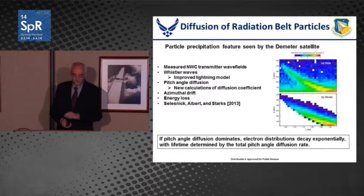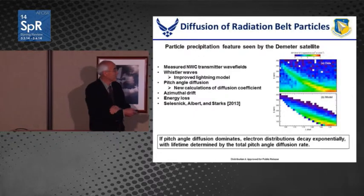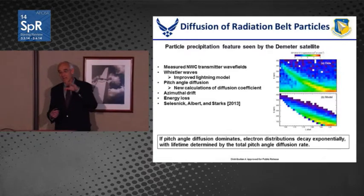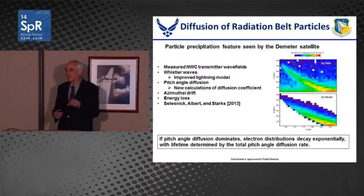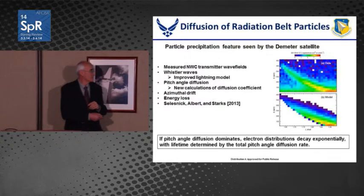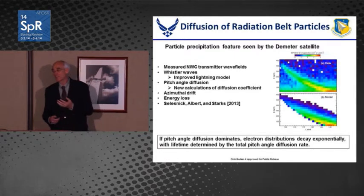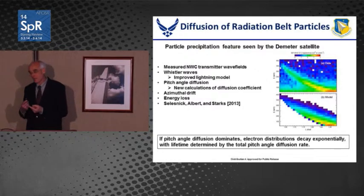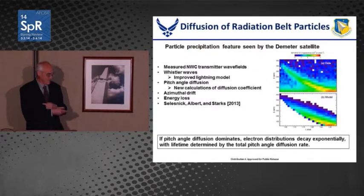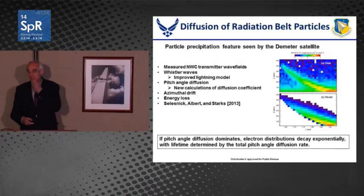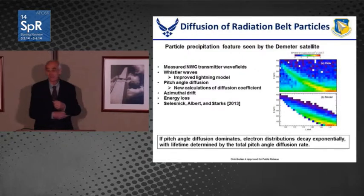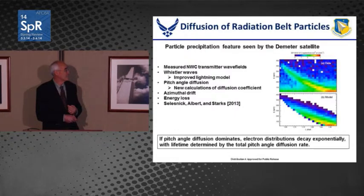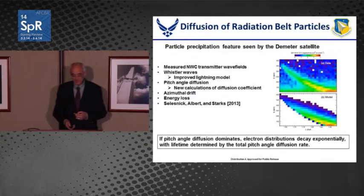A particle precipitation event is shown as a spectrum of energy versus L-shell, where L-shell is a measure of the altitude of the magnetic field line as it crosses the equator — higher L-shell means higher altitude. To successfully predict what's happening in the radiation belts, you need to know not only about high-energy particles and wave-particle interactions, but also something as far-ranging as the origin of Whistler waves — which means you need a lightning model, since most Whistler waves are launched by tropospheric lightning. You also need to know about pitch-angle diffusion, azimuthal drift, and energy loss from the radiation belts.